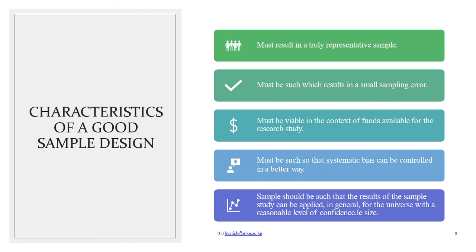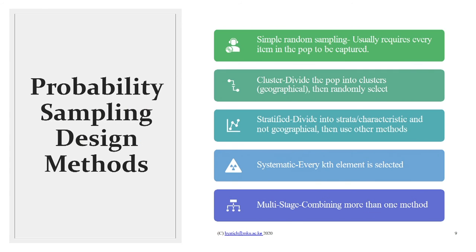Now let's look at the different types of sampling methods. We have two categories: probability sampling designs and non-probability sampling designs. I will look at probability sampling designs first, and I expect you to read more on them. Number one is simple random sampling. The simple random sampling design is explained by the word itself — it is a randomization of items.